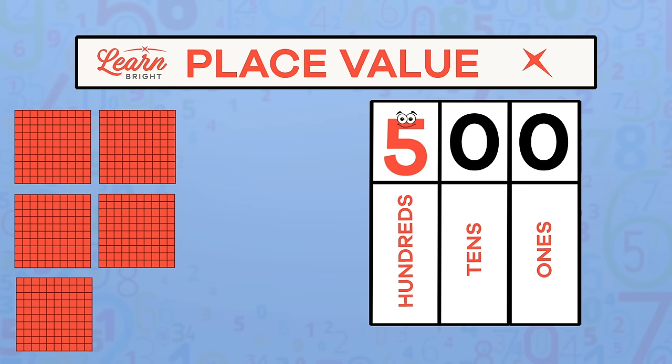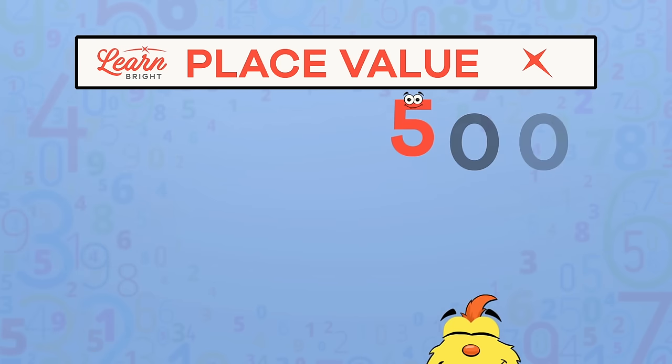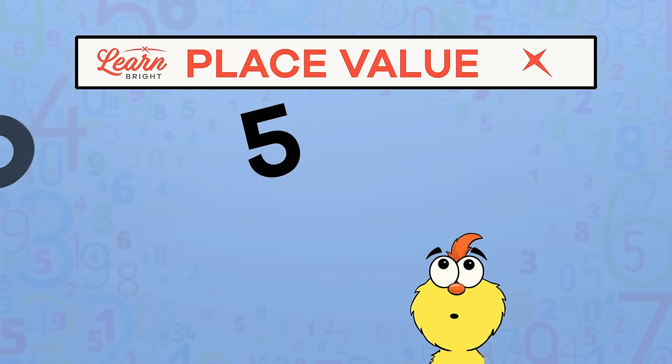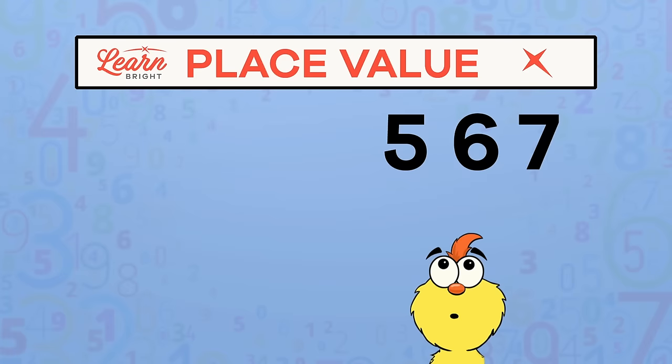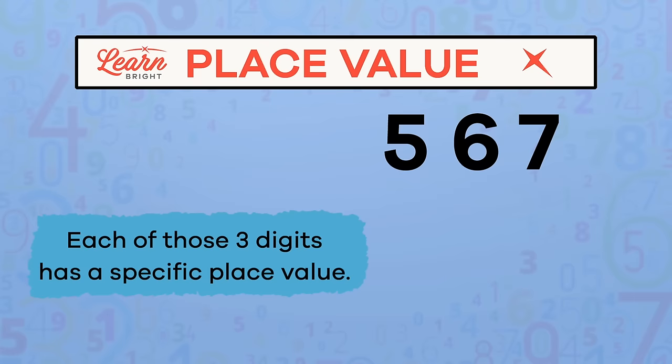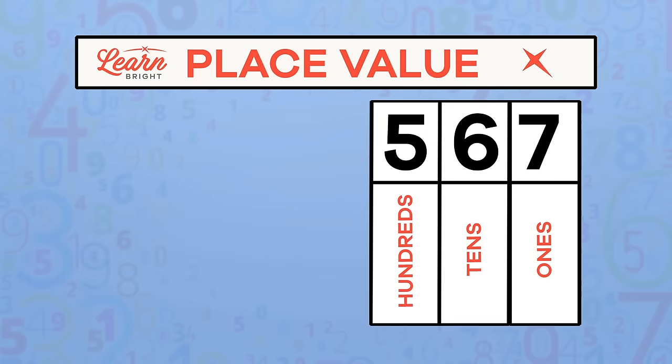Let's look at a number with three different digits. This number is 567, and each of those three digits has a specific place value. Let's slide this number into our chart. The place value is now listed below each digit.